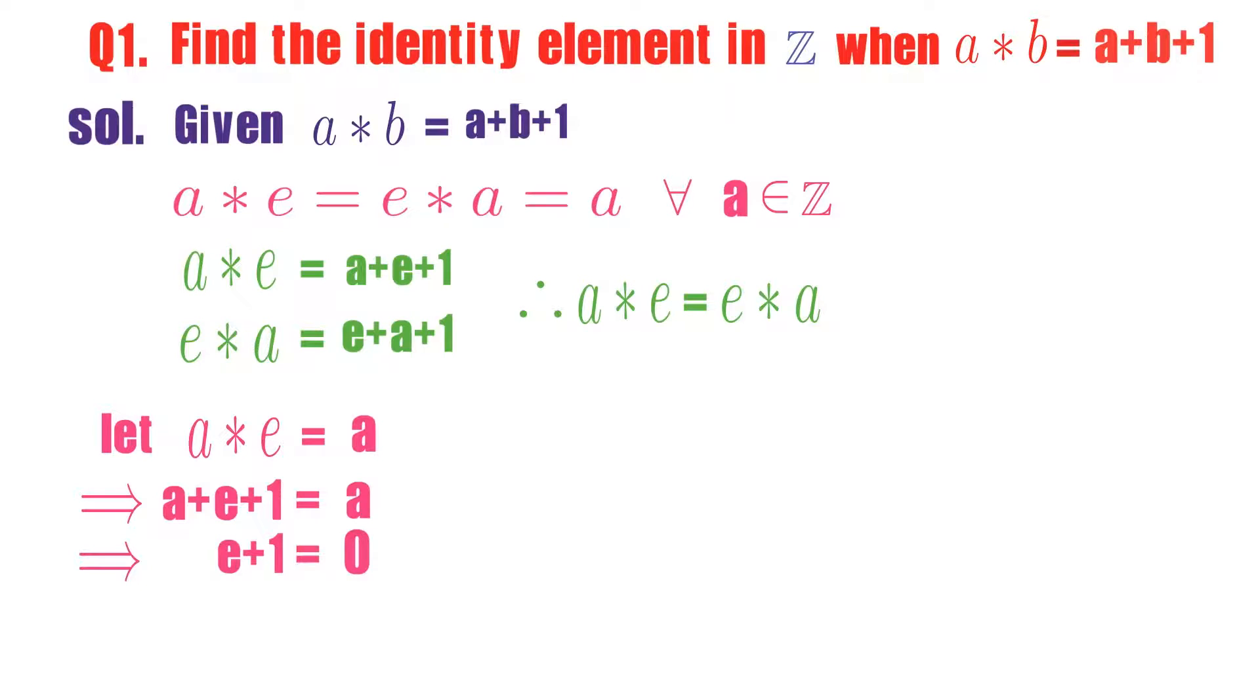What is e from this? e equals minus 1. Observe here, e means identity element. We got that e is minus 1. Identity element is minus 1. Is minus 1 an integer? Yes, of course.